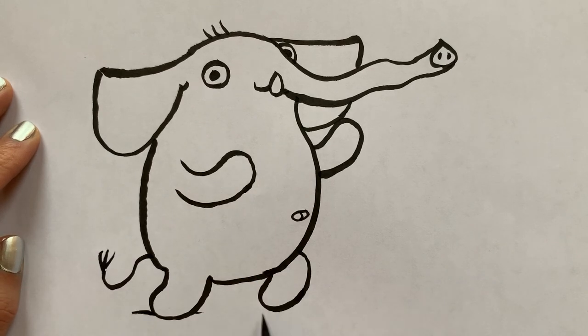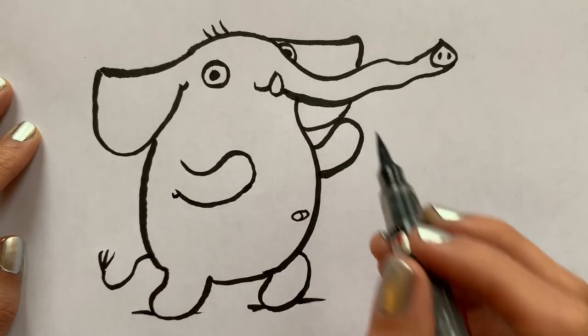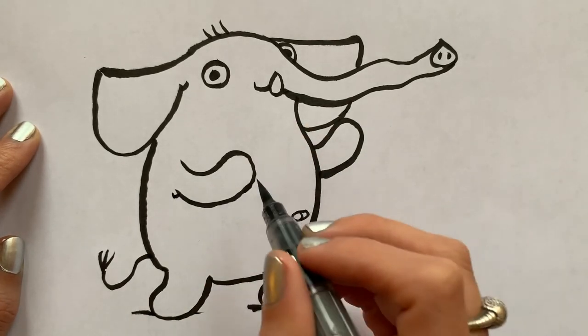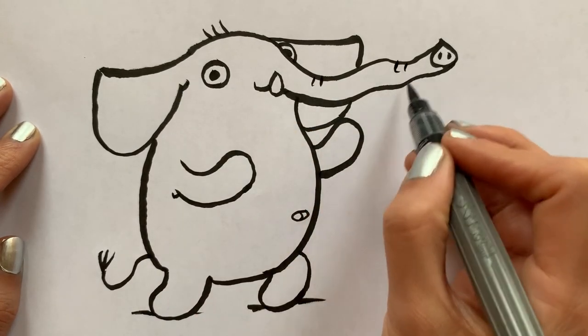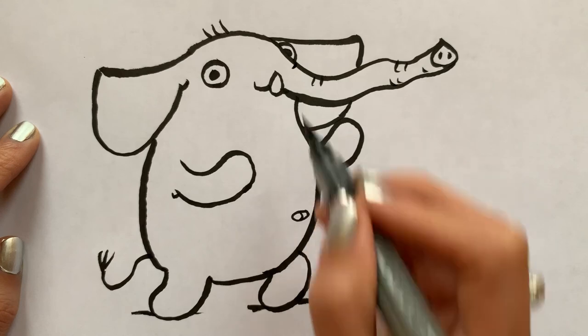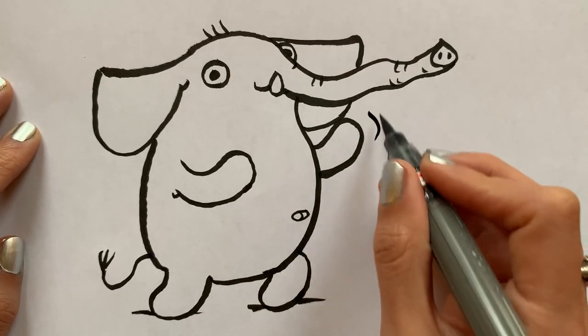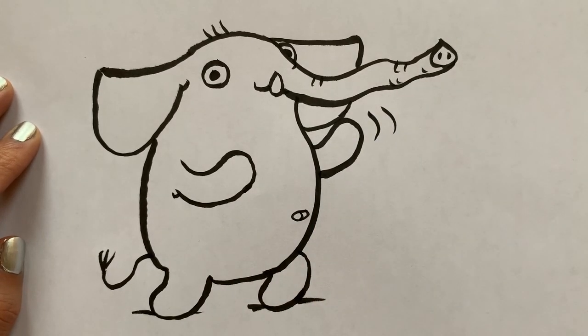Sometimes I'll add a little bit of shadow underneath and I'll add a little bit of just lines, like a couple of lines to show that she's got kind of some wrinkles and folds. I'll add a few wrinkles on her trunk. She's an elephant after all and sometimes I'll add a couple of motion lines just to show that she's waving and that's how you draw an elephant.